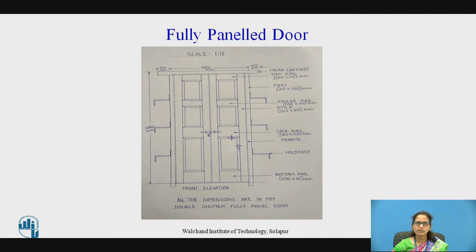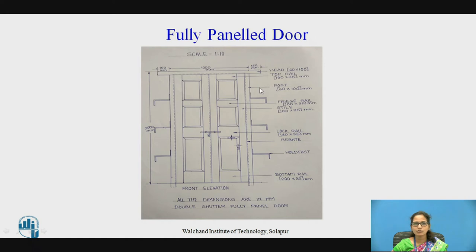For doors, we have the head of the frame. The sill of the frame is also given, but in many doors the sill is not provided — the sill is provided for windows. Here we have the head of the frame as the topmost member. The clear opening is 1000 mm by 2000 mm, which is one meter wide by two meters high. The sill is not considered here; the door is fixed directly at floor level. A gap of six mm is left at the top of the floor so that the doors can be easily closed and opened when fitted.